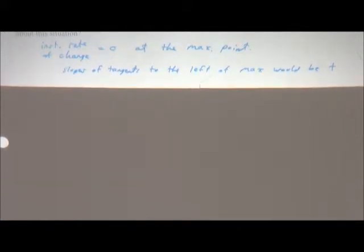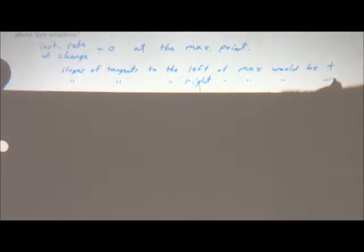And then you get up to the top, you get that zero, and then what happens on the right side of the curve? Negative. Yes, so the slopes of the tangents to the right of the maximum would be negative.